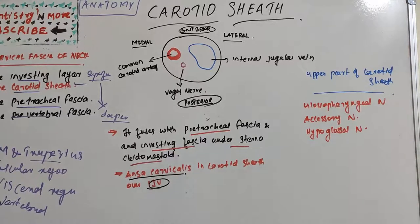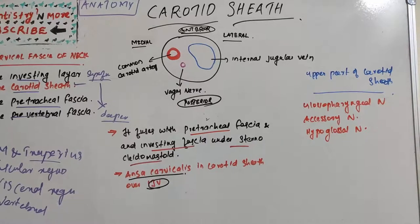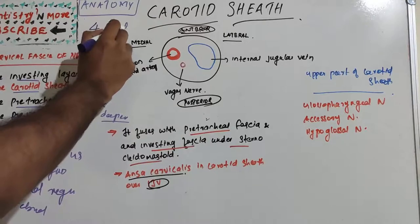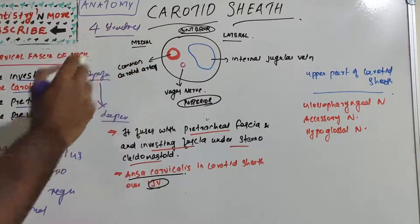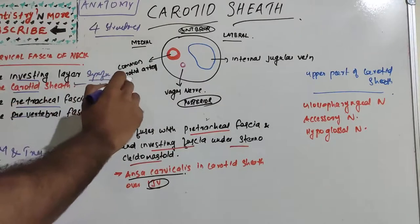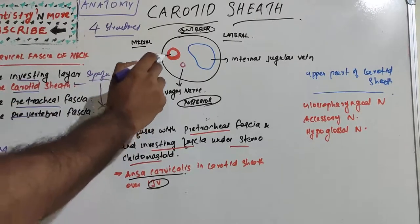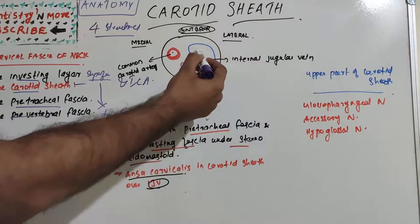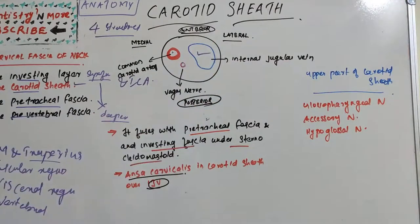The carotid sheath has four major structures. The first is the common carotid artery and internal carotid artery. Then there is the internal jugular vein, the vagus nerve which is the tenth cranial nerve, and also deep cervical lymph nodes.